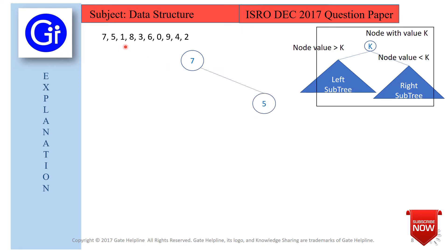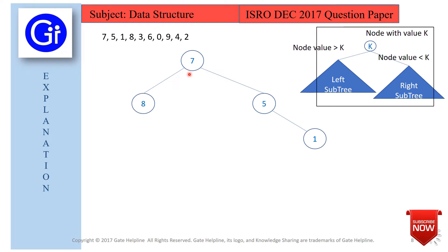Next is 1. Since 1 is less than 7 and less than 5, it goes to the right of 5. After that we have 8. Since 8 is greater than 7, and greater values go on the left subtree in reversal ordering, 8 goes to the left of 7.